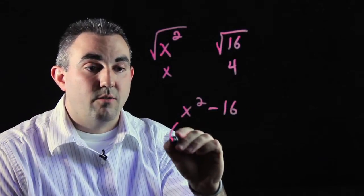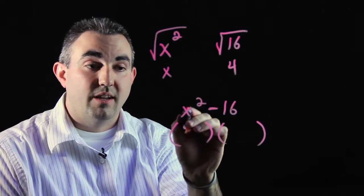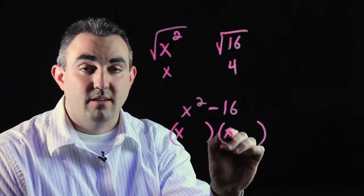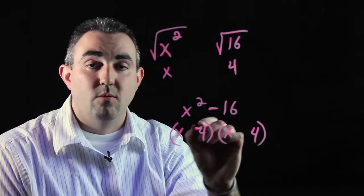The thing to do here is to remember when you're factoring this polynomial, we know to get x squared, it's x times x. So one x here, one x here. And we know to get 16, it's 4 times 4. One 4 here, one 4 here.